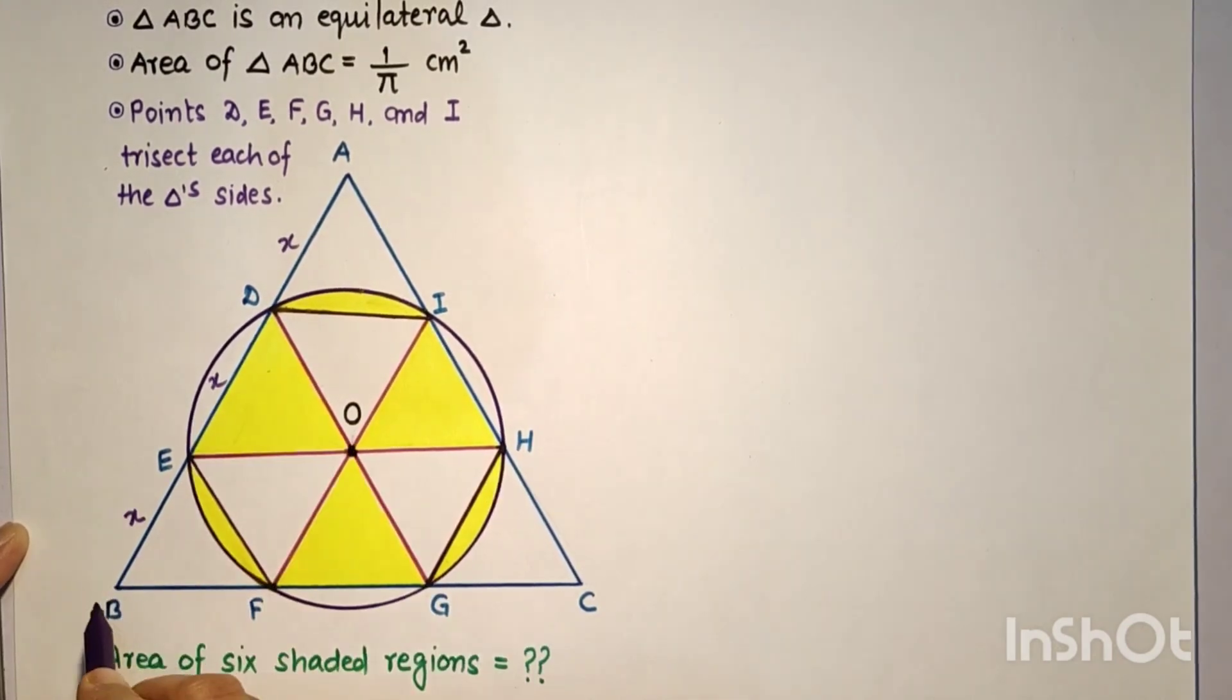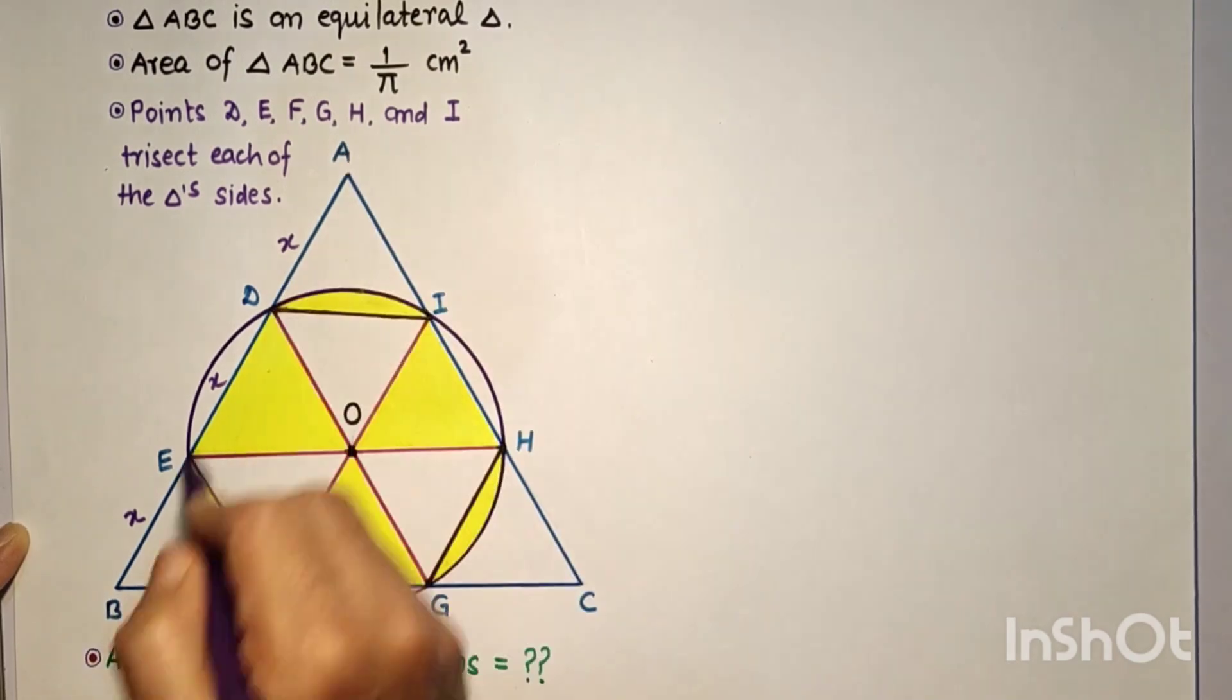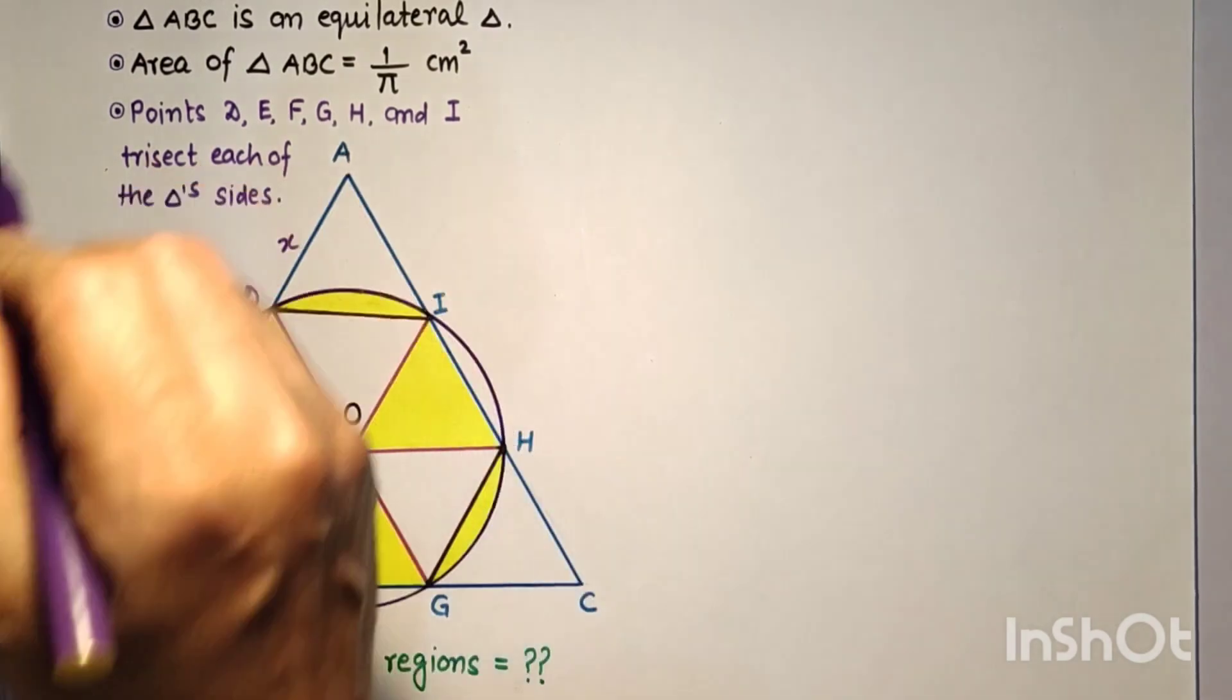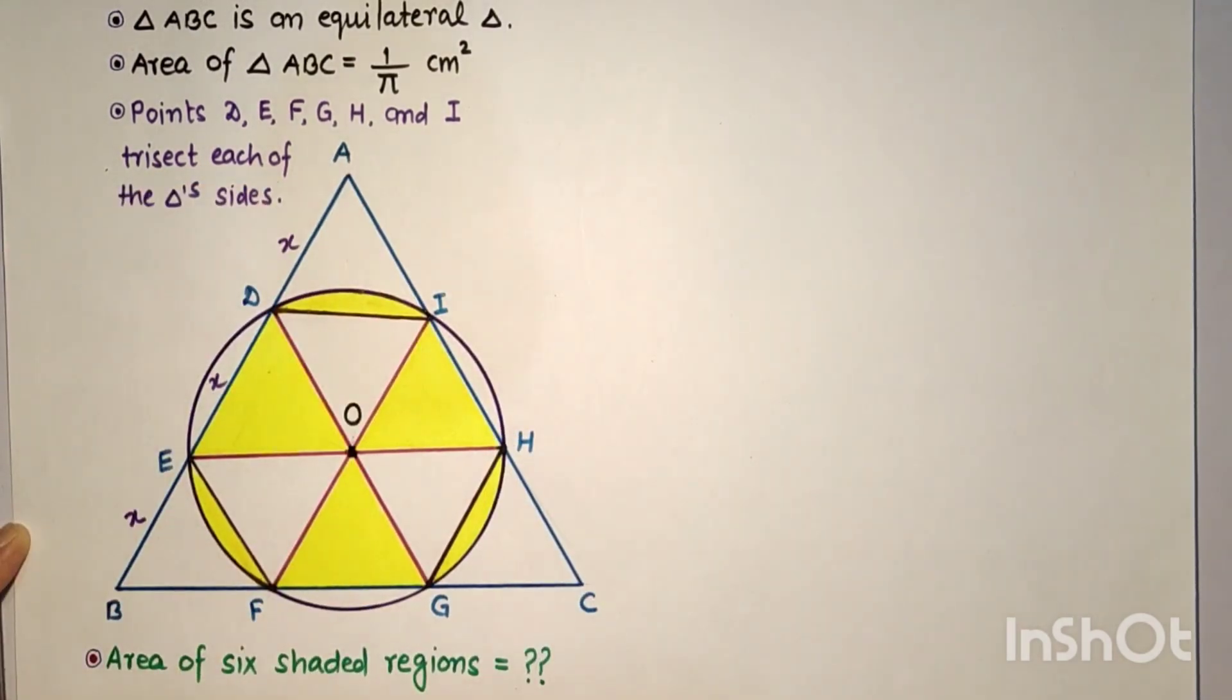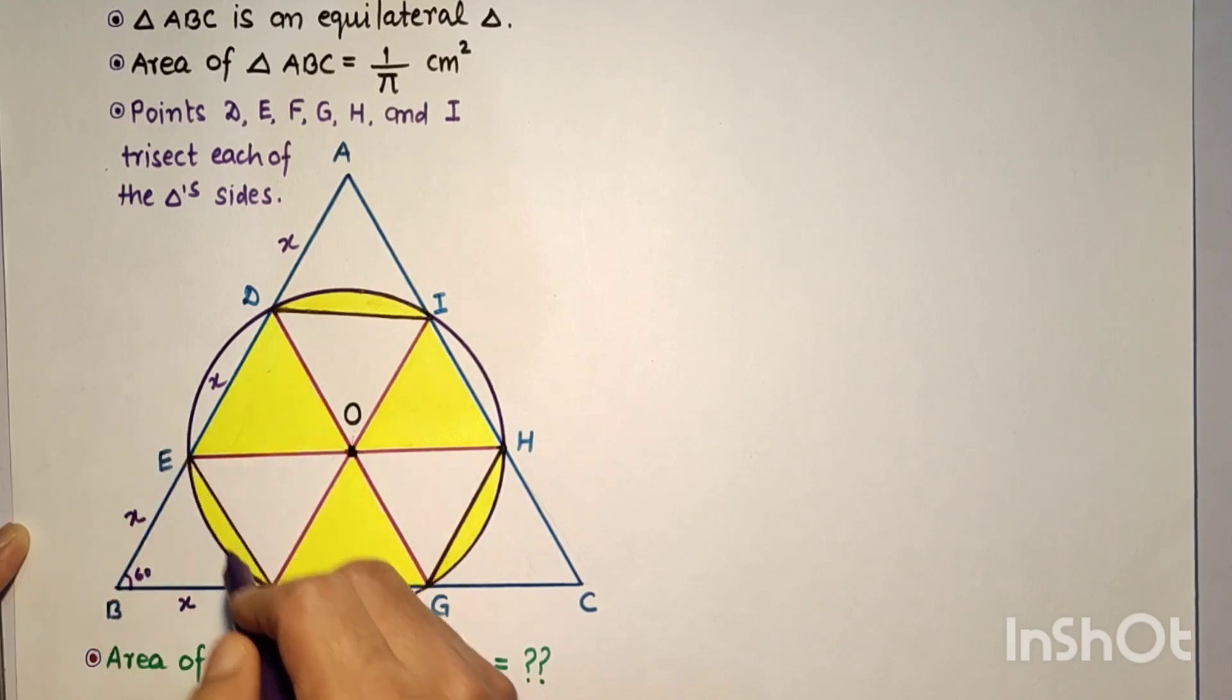then AD, DE, and EB are all X. Similarly, BF, FG, and GC are X. So AB is 3X, BC is 3X, and AC is 3X. This angle is 60 degrees.